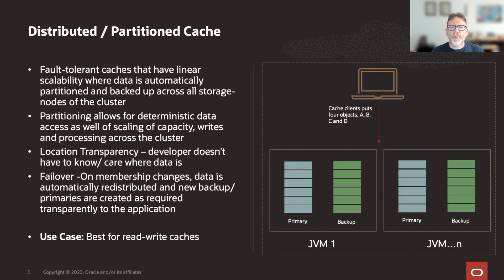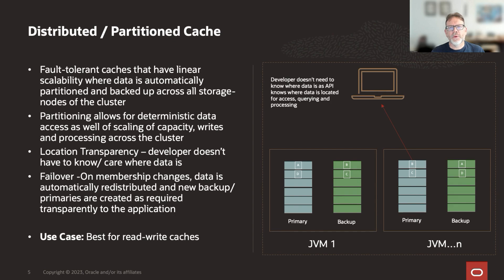A distributed or partitioned cache is a fault-tolerant cache where the data is automatically partitioned and backed up across storage nodes in the cluster. Partitioning of the data allows deterministic access as well as scaling of capacity, writes, processing and querying across the cluster. The data location is also transparent to the developer, so it doesn't matter if you have three or three hundred nodes — you just use the same API. On membership changes or failures, data is automatically redistributed and new backups and primaries are created as required, transparently to the application. This is the most commonly used cache in Coherence and is best for high performance read-write caches.